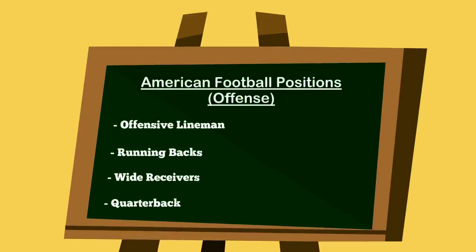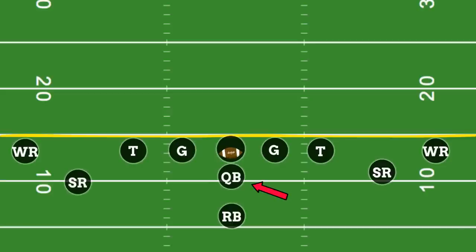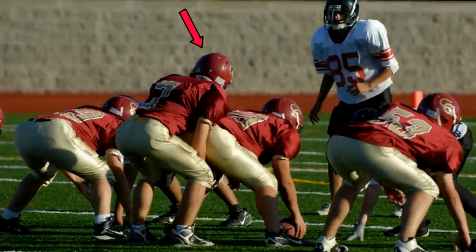The final offensive position is the quarterback, who will be delivering the football to both the running back and the wide receivers. The quarterback is one of the most important positions on the field. They will take the snap from the center either standing directly behind him, as shown in this picture, or in a shotgun snap where he stands about four yards behind the center — getting the football, handing it to the running back, or throwing it to the wide receivers.